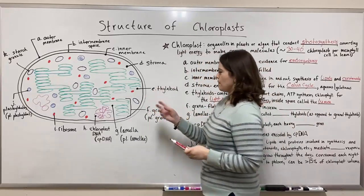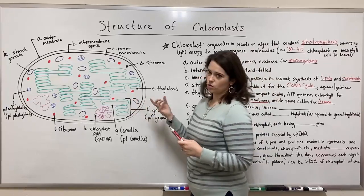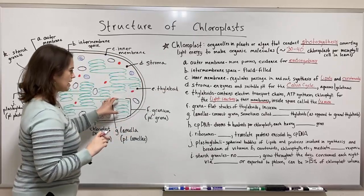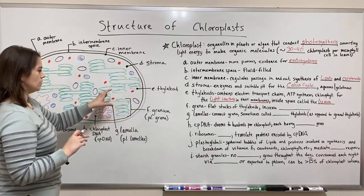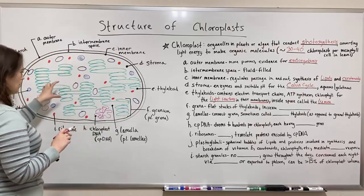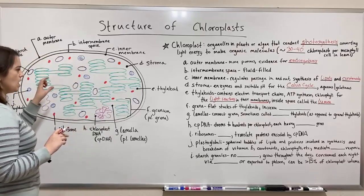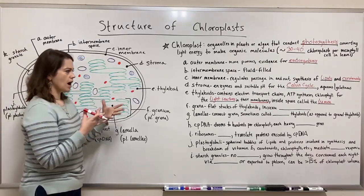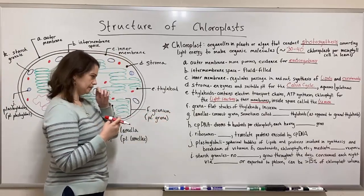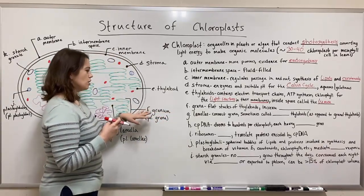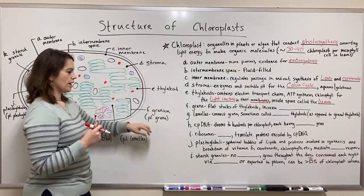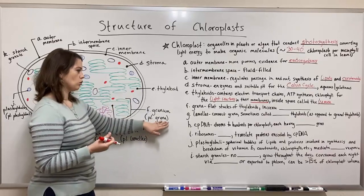Now let's talk about what a stack of thylakoids is called. A stack of thylakoids is called a granum. Each chloroplast has multiple grana — that's the plural form — which are these stacks of thylakoids. So if you're talking about just one, it's a granum, ending in U-M. If you're talking about multiple, they're called grana.